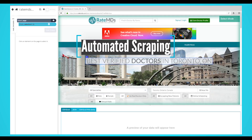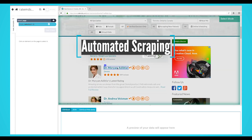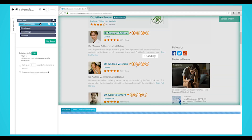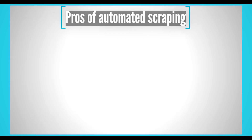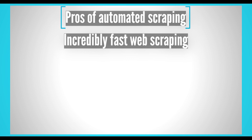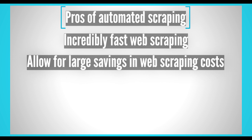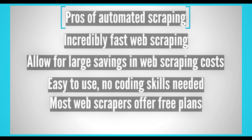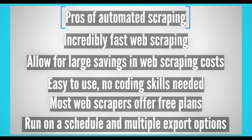On the other side of the spectrum, we have automated web scraping. Automated web scraping tools have become increasingly popular due to their ease of use and savings in time and costs. These tools come in many different shapes and sizes, from simple browser extensions to more powerful software solutions. The pros: it allows for incredibly fast web scraping, extracting hundreds of records in mere seconds. These tools allow for large savings in costs, and most modern web scrapers have friendly UIs that allow anyone to scrape data without any coding skills. Most web scrapers offer free plans, and they can be run on a schedule to output data to a Google Sheet or JSON file — essentially creating a live API for any dataset on the web.